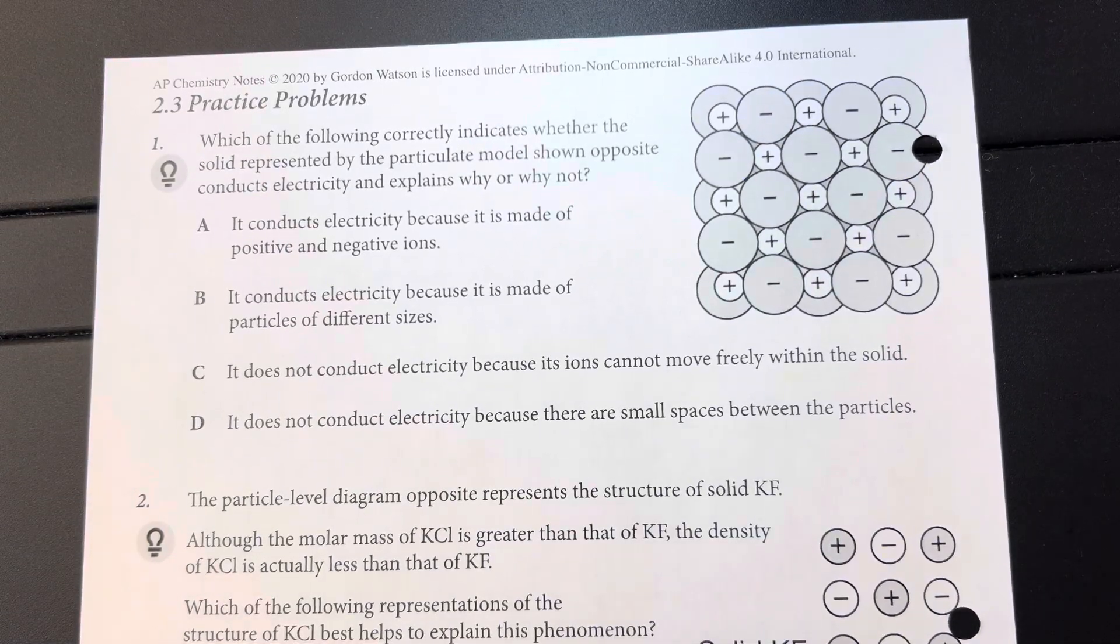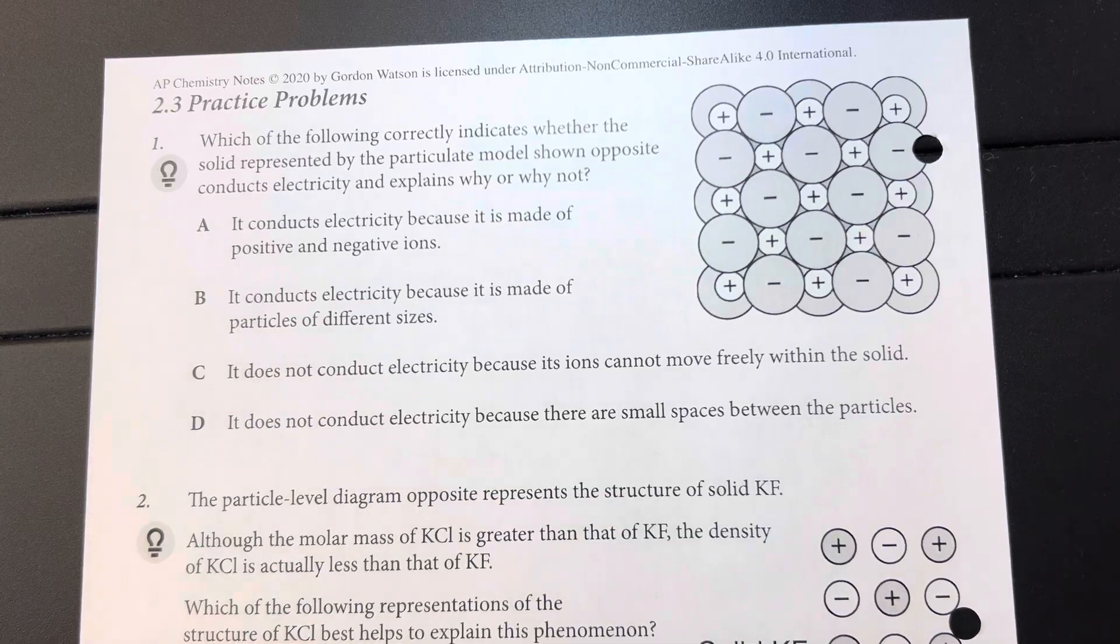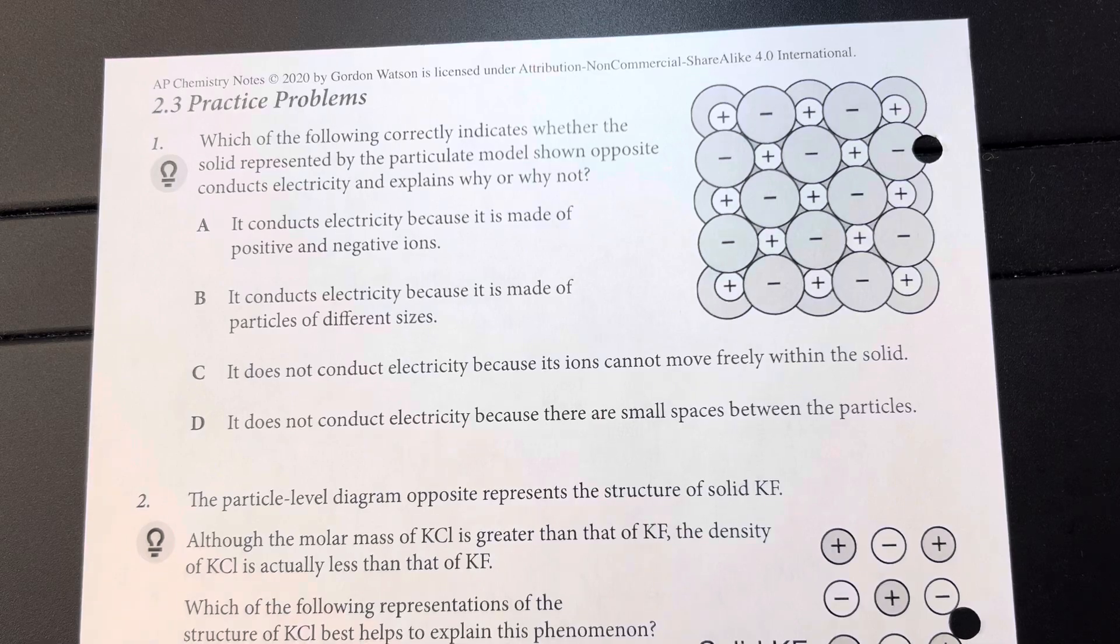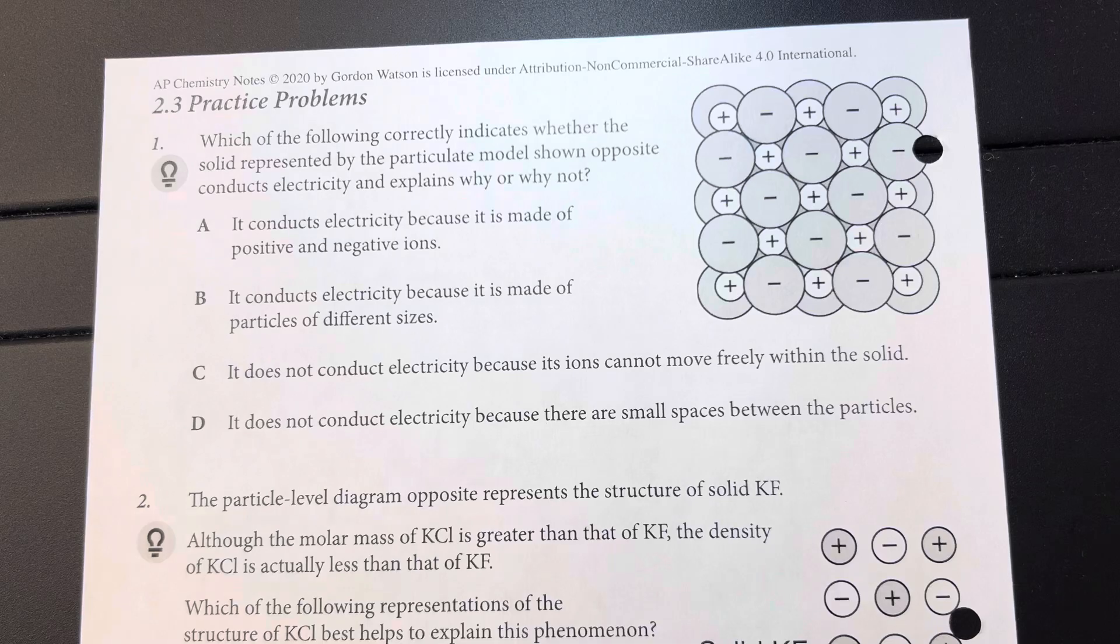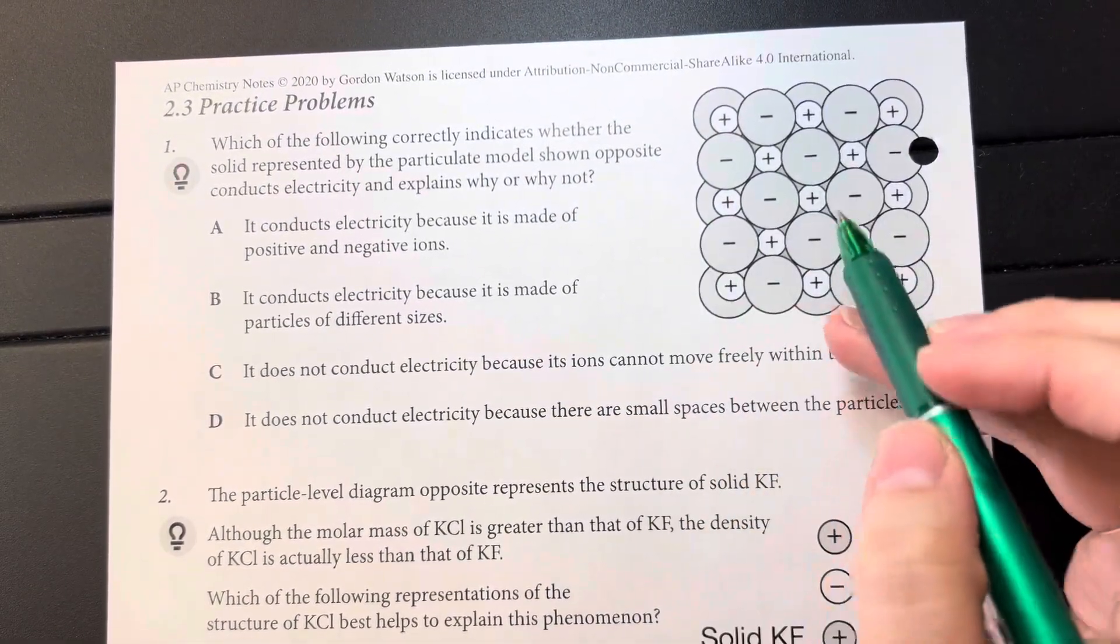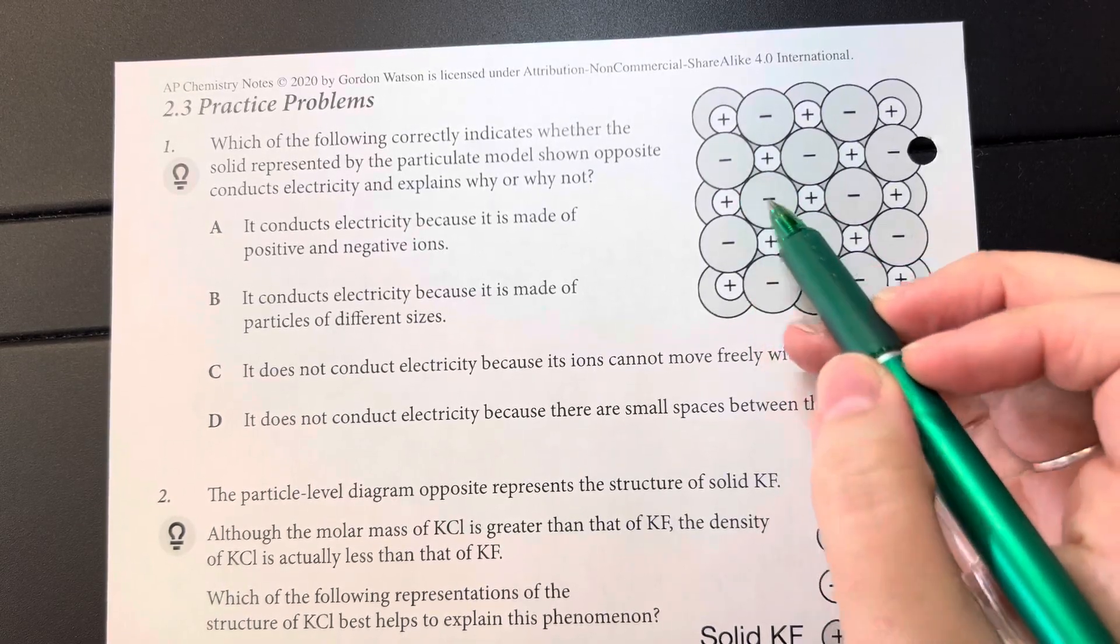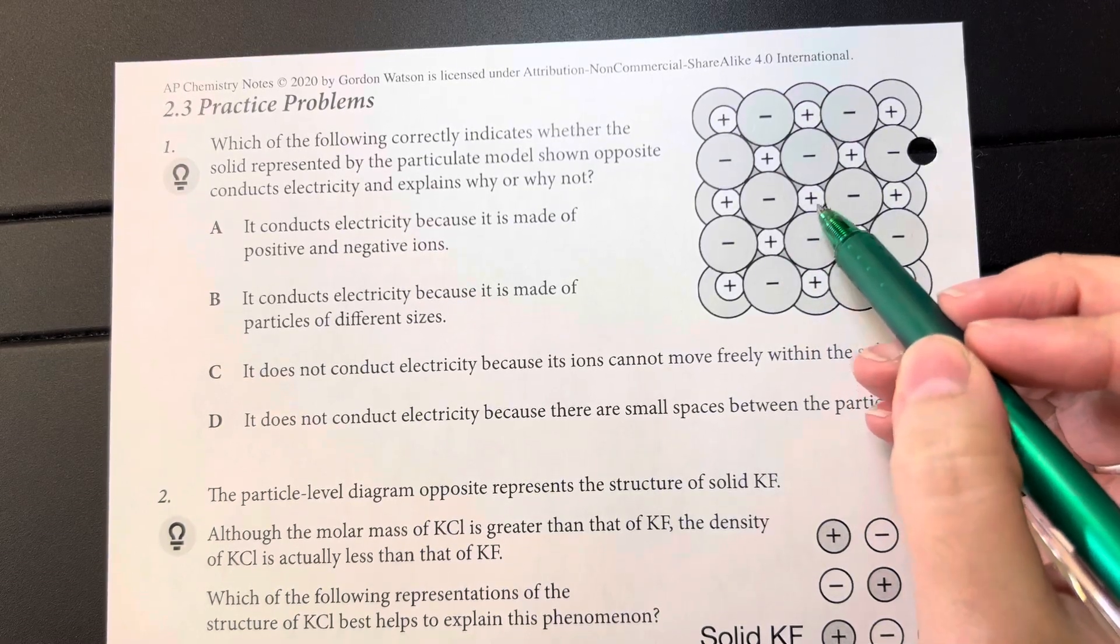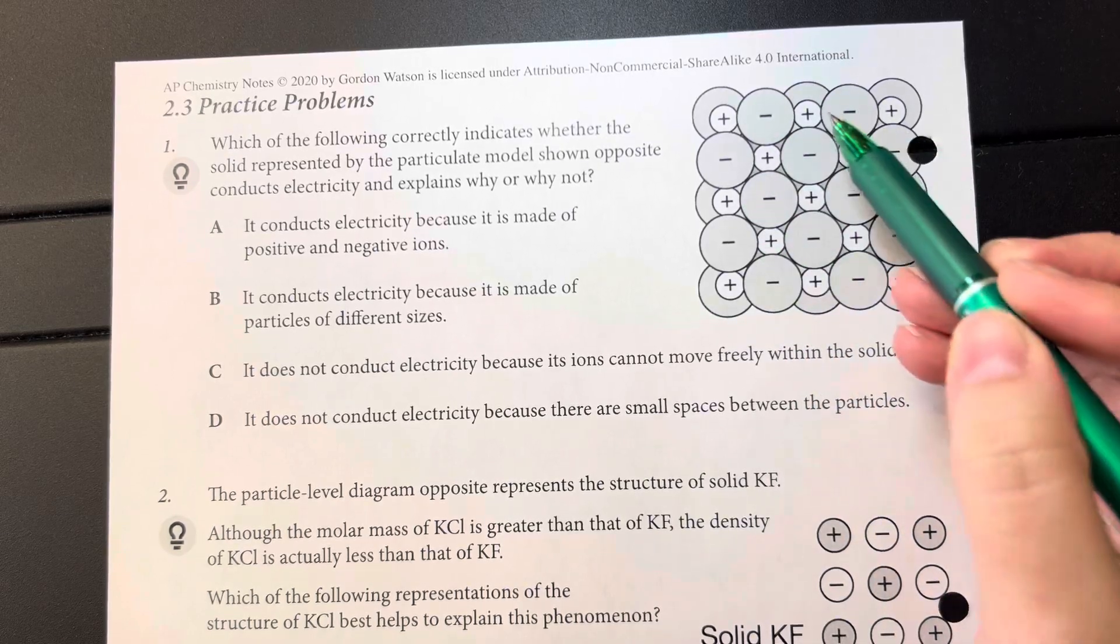Unit 2.3 practice problems. Which of the following correctly indicates whether the solid represented in the particulate model shown opposite conducts electricity and explains why or why not? When we look at this model, we can see that we have cations and anions that are very tightly packed together, but there's not any space for movement within this substance.